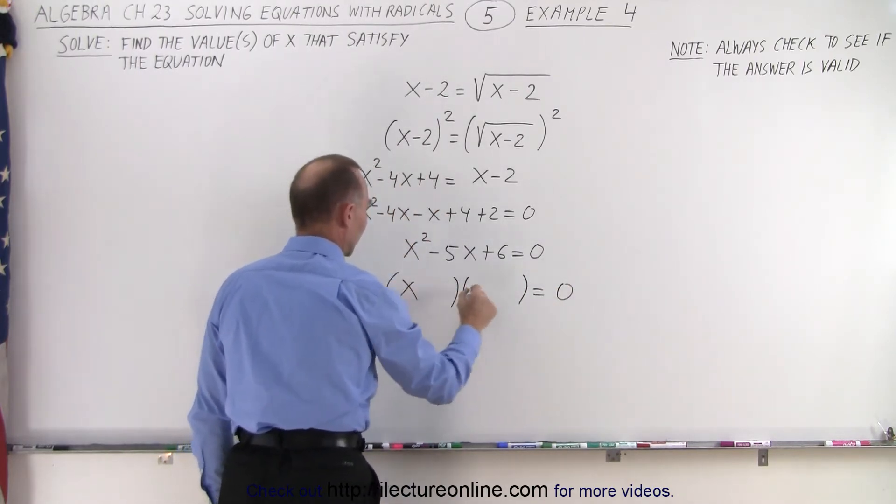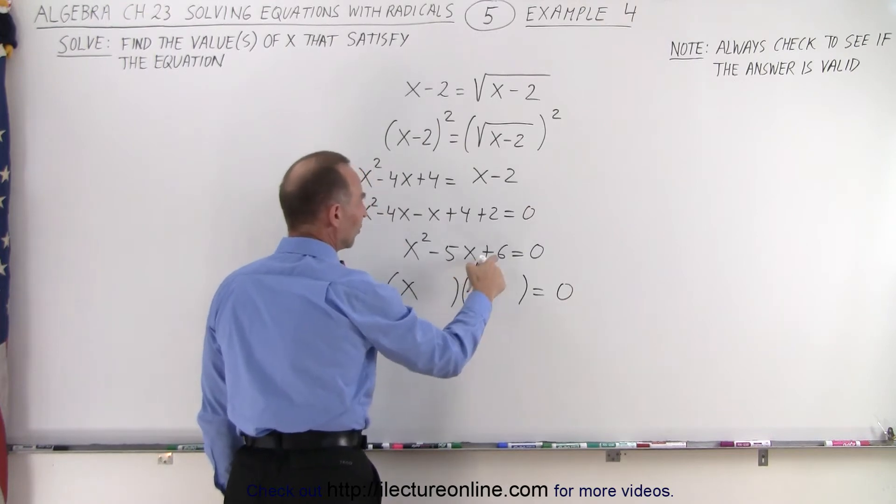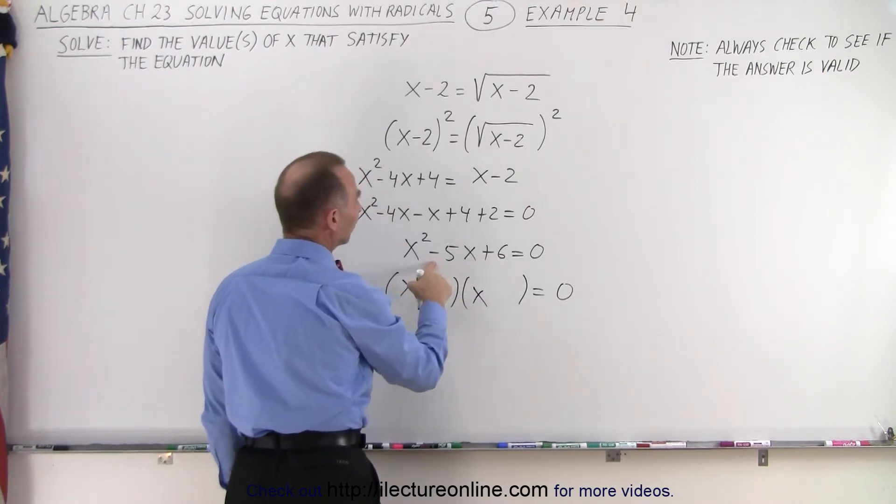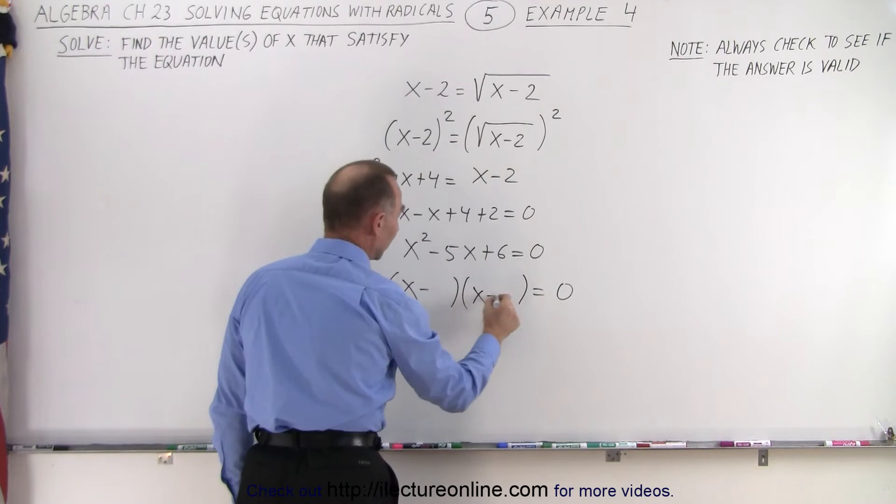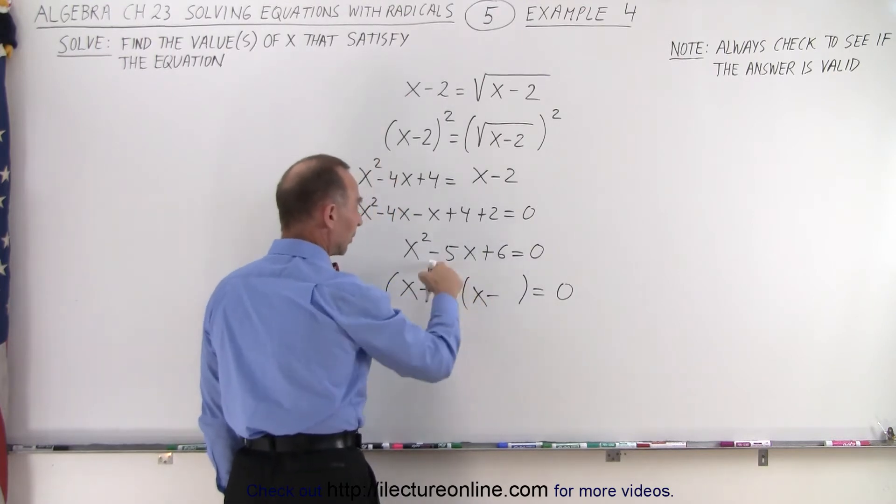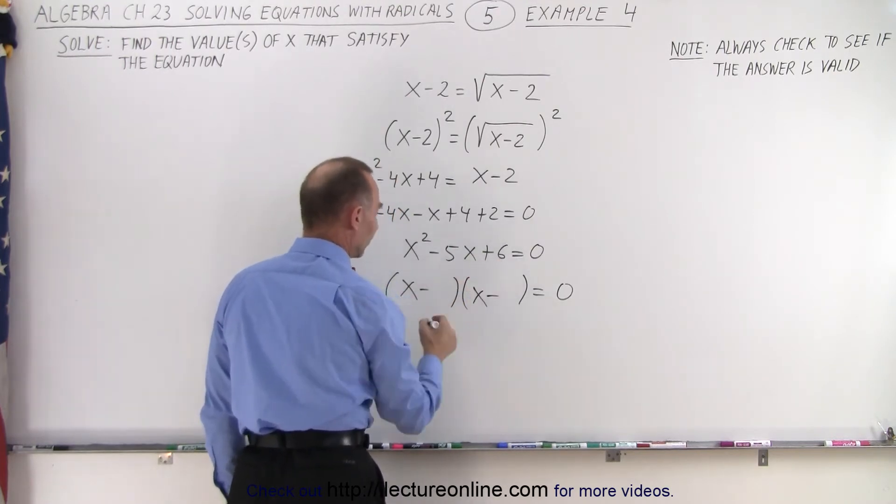So obviously we have an x and an x. But the signs, since this is positive and this is negative, they both need to be negative. And it looks like 2 and 3 will add up to 5 and multiply to give us 6.